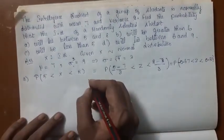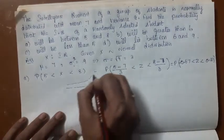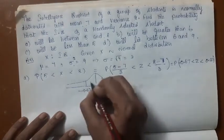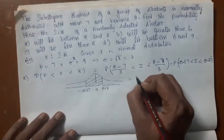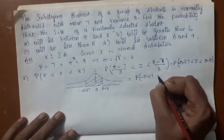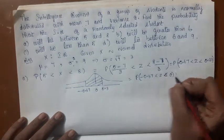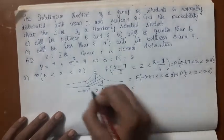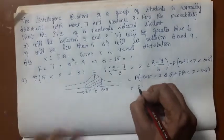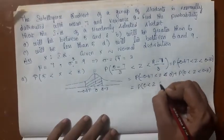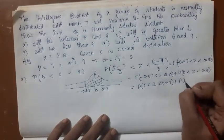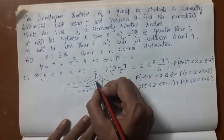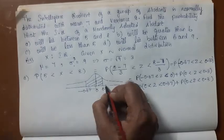Draw the curve. Minus 0.67 is somewhere here and 0.33 is somewhere here. You need this area. So to make use of the tables, you can divide this area as minus 0.67 to 0 plus 0 to 0.33. But minus 0.67 can be written like this, 0 to plus 0.67. Only then you can make use of the table.